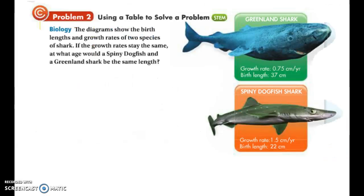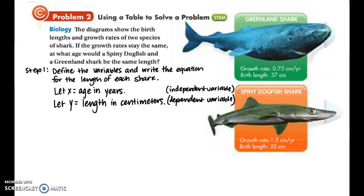In example 2, we have the opportunity to check out a real life application problem and use a table to solve it. So here it is. The diagram showed the birth lengths and growth rates of two species of shark. If the growth rates stay the same, at what age would a spiny dogfish and a greenland shark be the same length? So as always, when we're given a word problem, we want to organize the key information and define our variables. And then write an equation for the length of each shark. So we're going to say that x is going to be standing for the age in years. And that is the independent variable. And then we're going to say that y equals the length in centimeters. And that's the dependent variable.